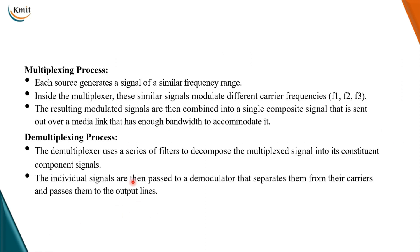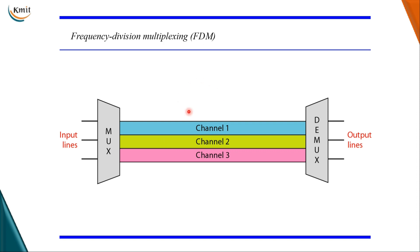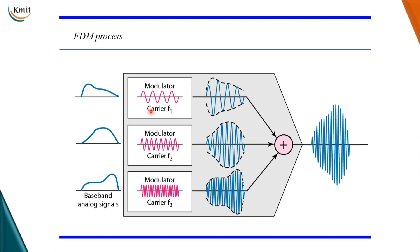You can see the process of FDM where we have n input lines that are being combined into a single transmission. Each transmission takes a channel of the link for data transmission, and at the demultiplexer it is separated back into multiple output lines. This illustrates both the multiplexing and demultiplexing processes.